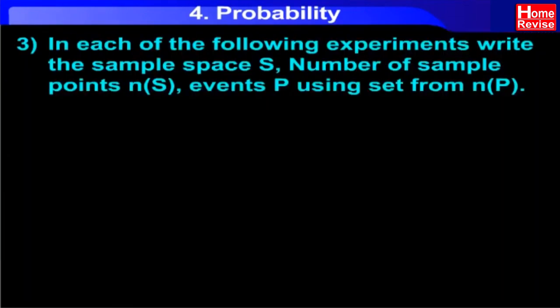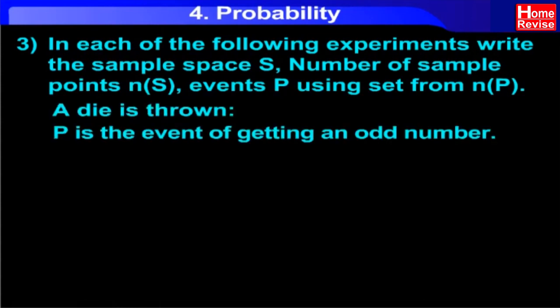In each of the following experiments, write the sample space S, number of sample points N(S), events P using set notation and N(E). When a die is thrown, P is the event of getting an odd number.